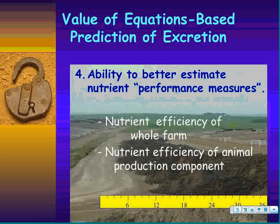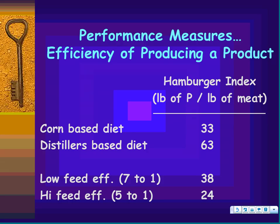I think we can also use this in better predicting nutrients for estimating total land requirements. There's even some possibility we could predict a manure sample reasonably well — perhaps even better than the sample itself — but that's unproven. And I think we need to do a better job providing producers with performance measures on nutrients. We can use what we've gone through today to tell the producer the pounds of phosphorus per pound of meat produced — what I call my hamburger index. A corn-based ration might require 33 pounds of phosphorus per pound of meat, while a distillers-based diet requires 63 pounds.